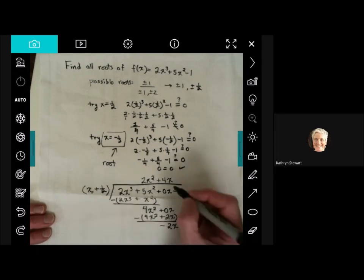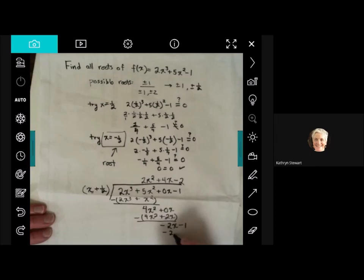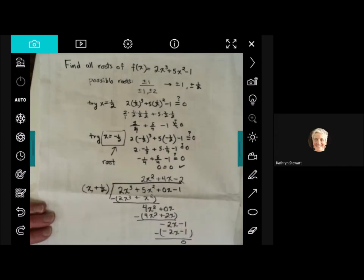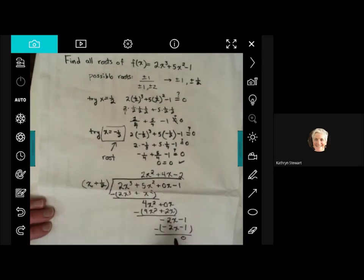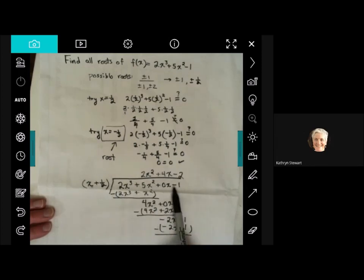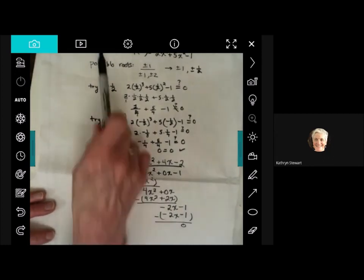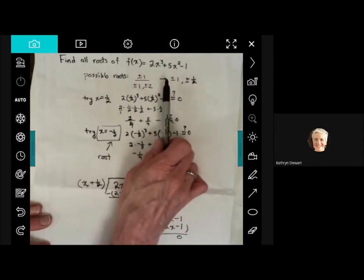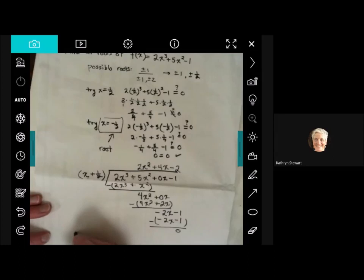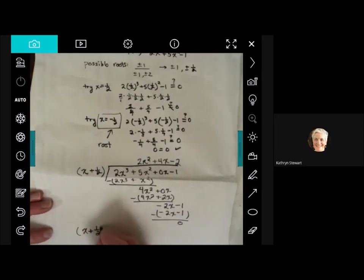And I do the process again. x times what is negative 2x? It would be a minus 2. Negative 2 times x is negative 2x. Negative 2 times 1 half is minus 1. This is going to work out beautifully. Negative 1 minus a negative 1, that's negative 1 plus 1 and 0. And of course, if you don't get a 0 here, then you did something wrong, because if x plus 1 half is indeed a factor of this, as we think it is, then it will divide nicely into this polynomial with a remainder of 0. All right, my friends, I have just factored my original function.